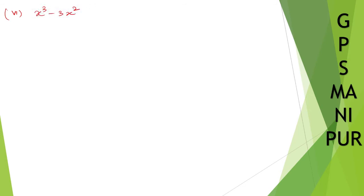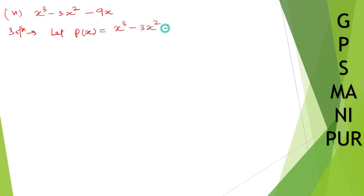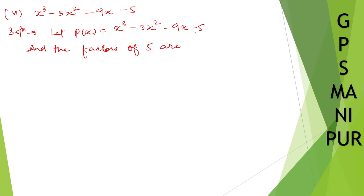The next question is roman number 6: x cubed minus 3x squared minus 9x minus 5. Solution: since this is a cubic, it will have three factors. Let p(x) equal to x cubed minus 3x squared minus 9x minus 5. The factors of the constant 5 are plus or minus 1 and plus or minus 5. Let us try these.